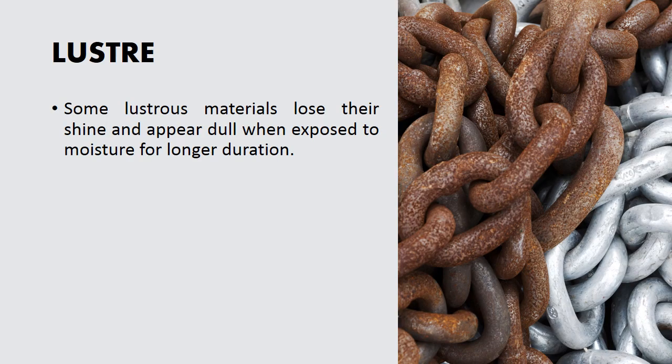Some lustrous materials may lose their shine and appear dull when exposed to moisture for a longer duration. As you can see in the picture, there is a rusted chain. This is the process of rusting, where iron reacts with the moisture and oxygen present in the air, causing it to lose its shine.